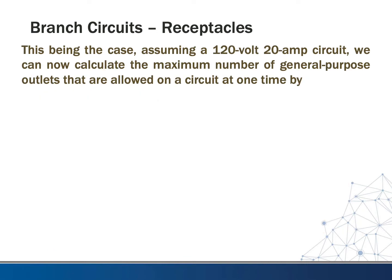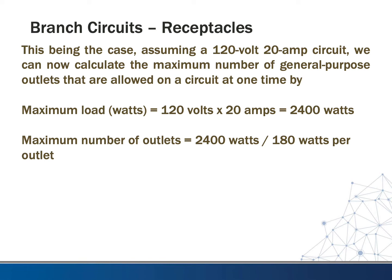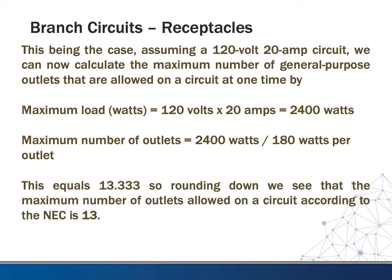Assuming a 120-volt, 20-amp circuit, we can calculate the maximum number of general purpose outlets allowed on a circuit. The maximum load on a 20-amp breaker is 2,400 watts. Since these are non-continuous, we can use the full rating of the breaker. Dividing 2,400 watts by 180 watts per outlet equals 13 and a third — so rounding down, the maximum number of outlets allowed on a circuit according to the National Electrical Code is 13.